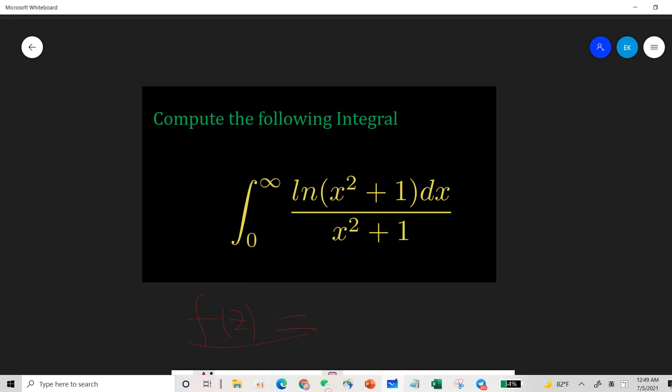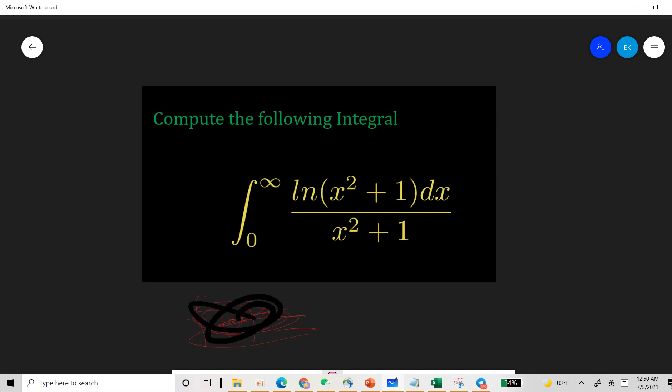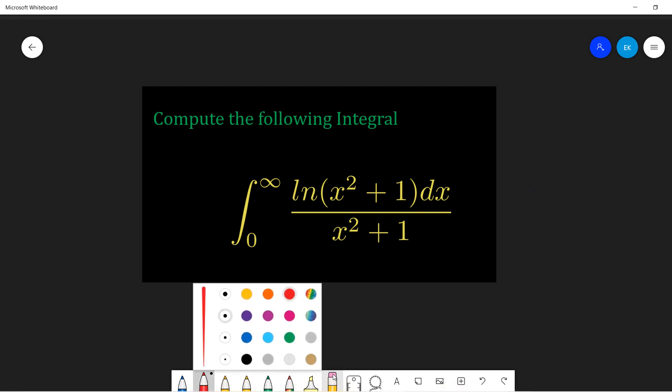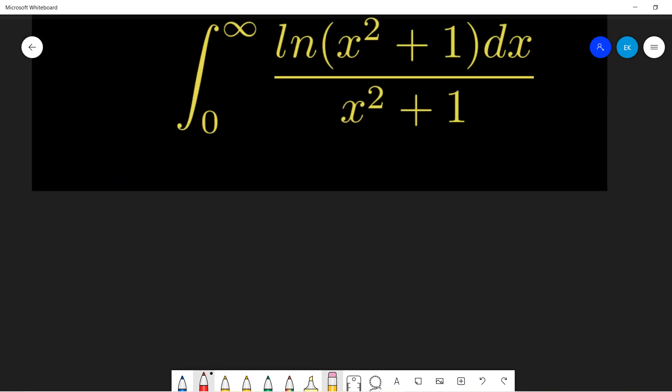The difficult part is that you need to find the suitable f of z and pick up the suitable contour so that you can extract some results. So let's define f of z to be log of z plus i divided by z squared plus one. So now you have a branch cut at the minus i. So you have minus i, and you need to pick up branch cut. I pick up branch cut like this.